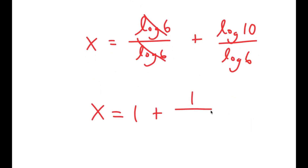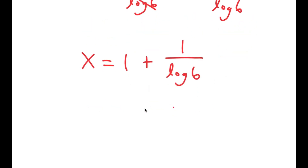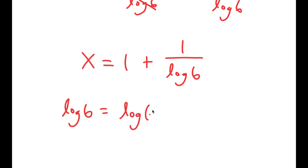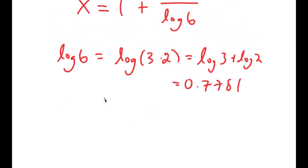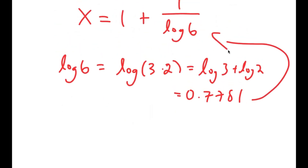Now log 10 is also equal to 1, so I have 1 plus 1 over log 6. Log 6 equals log of 3 times 2, which equals log 3 plus log 2. Plugging in the values, I am left with x equals 2.2852.